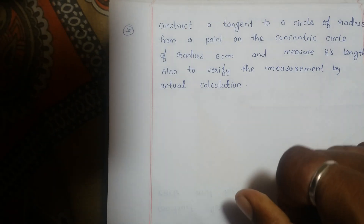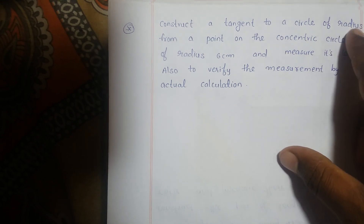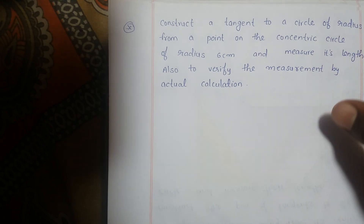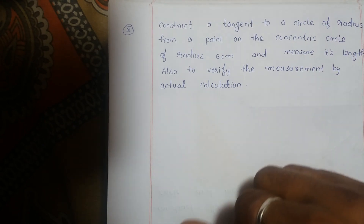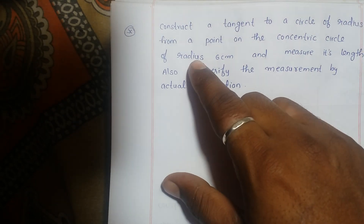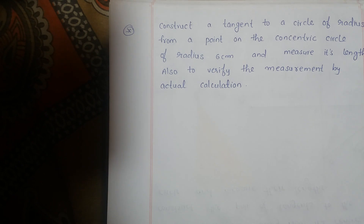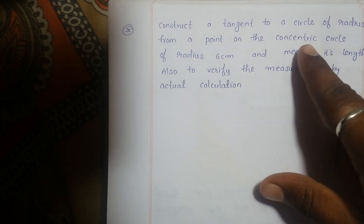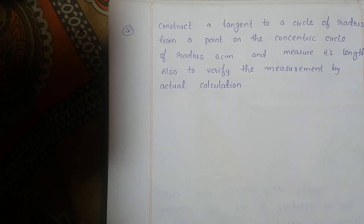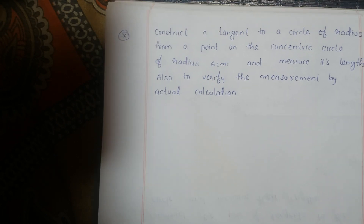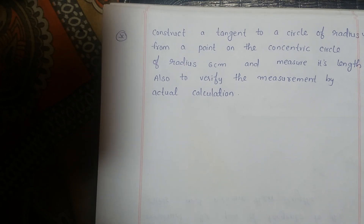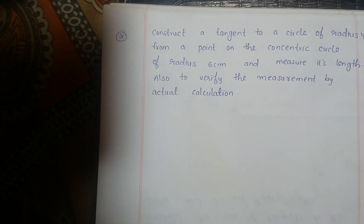Here we have to draw a circle of radius 4 cm and also a circle of radius 6 cm. These two circles are concentric circles — circles with the same center are called concentric circles.